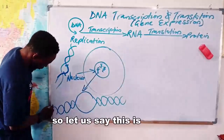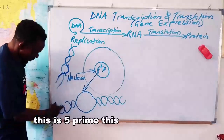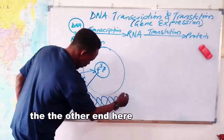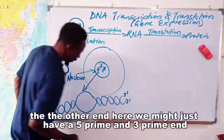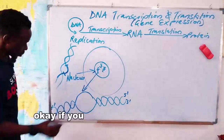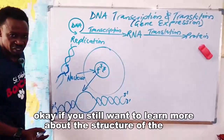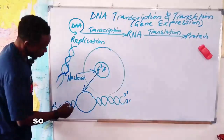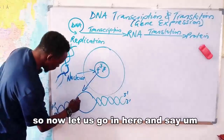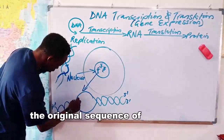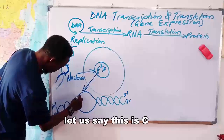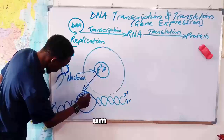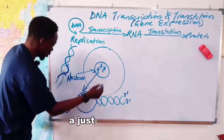So let us say this is the 3-prime end and this is the 5-prime end — this is a double helix. It has a 3-prime and 5-prime on one end, and a 5-prime and 3-prime on the other end. If you still want to learn more about the structure of DNA, check one of my previous videos.